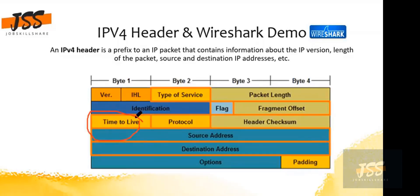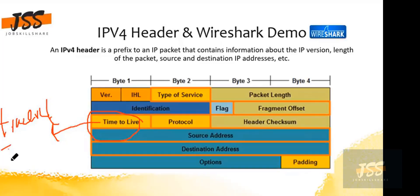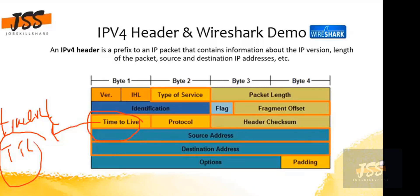Then we have Time to Live. If you're familiar with the traceroute command, we had this TTL. The TTL decreases as you go from hop to hop. But what is the logical reason why we need this — why do we use it?